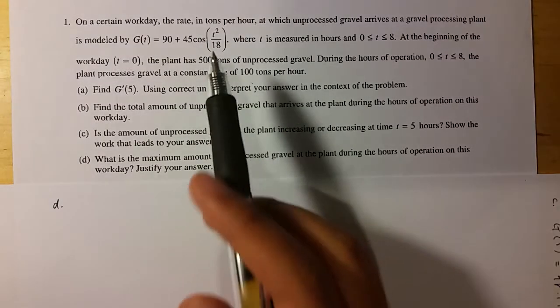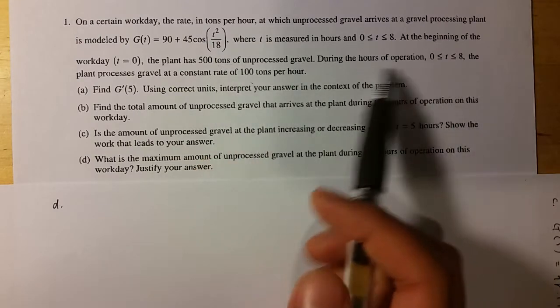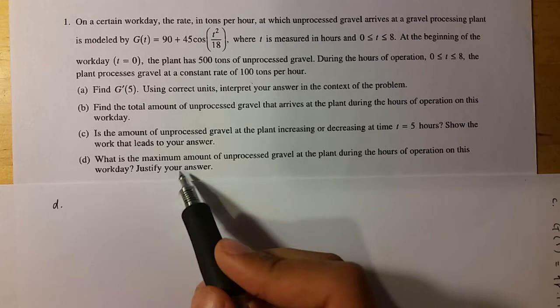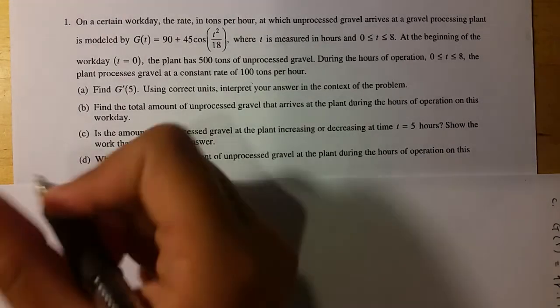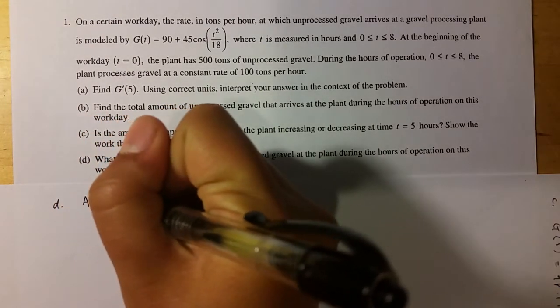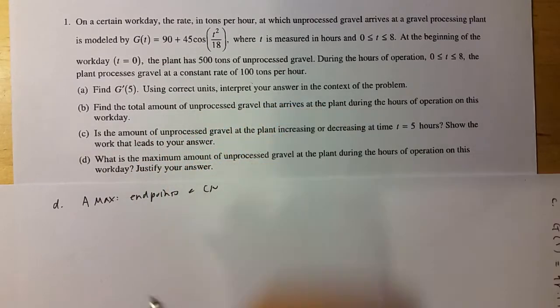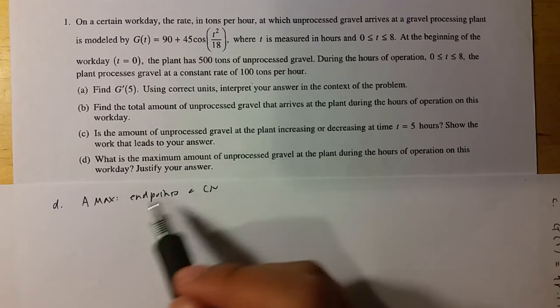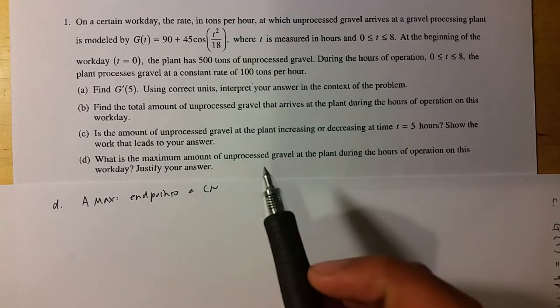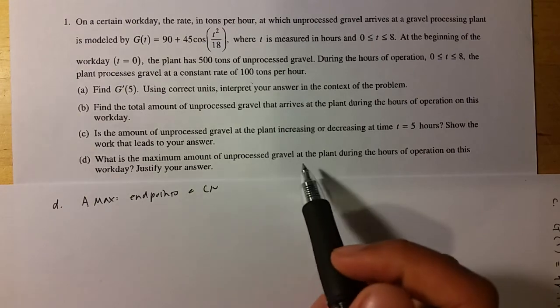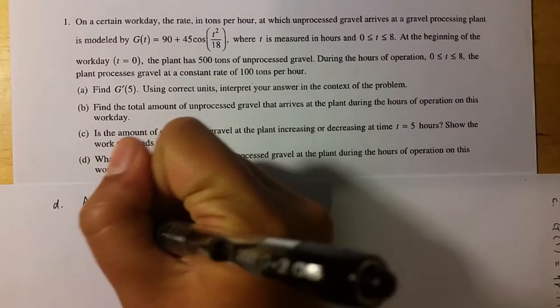So part D is asking the maximum amount of unprocessed gravel in the plant. So again, the unprocessed gravel means the amount coming in minus the amount going out or being processed. And so to find maximums, to find absolute maximums, you test endpoints and the critical numbers, right? That's just what this question is. But first, you have to find some sort of equation for the amount of unprocessed gravel.